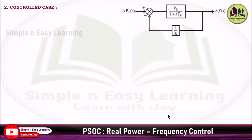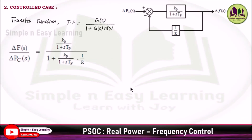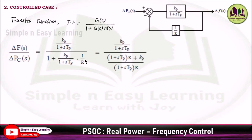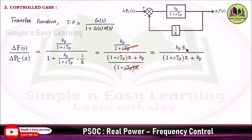It is a negative feedback loop, so applying the transfer function: del F(s) divided by del PC(s) equals KP divided by (1 plus STP), which is G(s) divided by 1 plus G(s) times H(s). Taking LCM in the denominator and cancelling the (1 plus STP) terms, R remains. The equation becomes KP times R in the numerator and (1 plus STP) times (R plus KP) in the denominator.